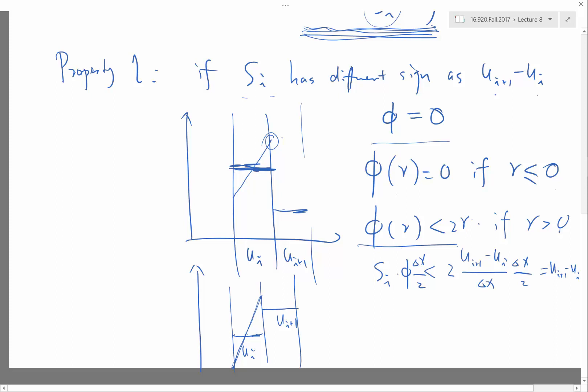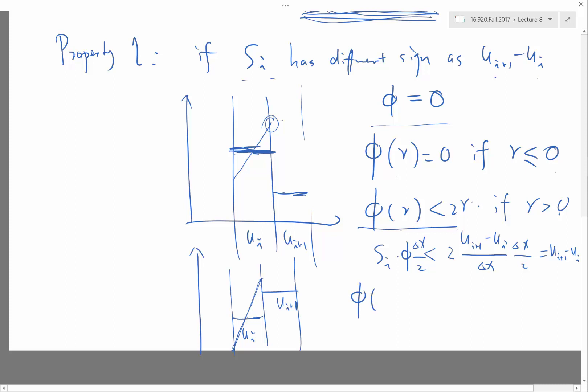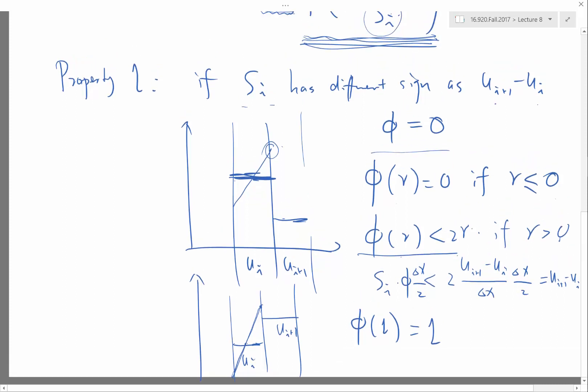And the third criterion, for example, is when phi of 1 actually has to be exactly equal to 1. That's because I want second order accuracy. Phi of 1, when r is equal to 1,